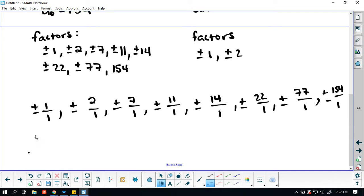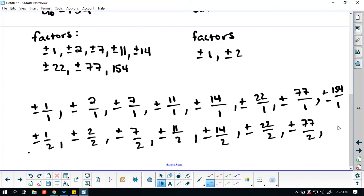Okay, now let's look at the 2's. We will have plus or minus 1 over 2, plus or minus 3 over 2, plus or minus 2 over 2, plus or minus 22 over 2, plus or minus 77 over 2, and plus or minus 154 over 2. Looking at this, we're going to eliminate anything that is similar. So this is essentially 1 over 1. This is essentially 7 over 1. This is essentially 11 over 1. This one is 77 over 1.